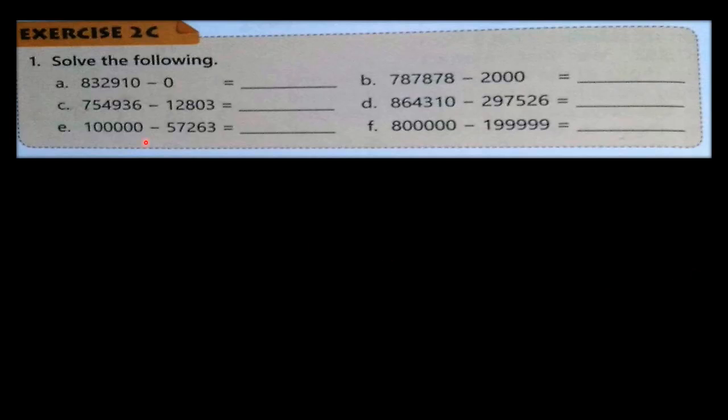Now the question is given directly. For number A, first count the digits: one, two, three, four, five, six — that means ones, tens, hundreds, thousands, ten thousands, and lakhs.